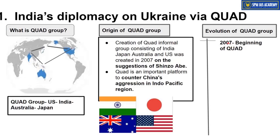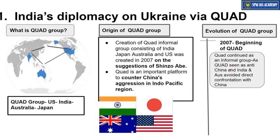In 2007, this idea was pitched, but Quad continued to be an informal group because India had some reservations. India had been trying to balance its ties with China given the huge economic integration — China is one of India's largest trading partners. Second, India shares a long boundary with China, and we do not want to provoke any border conflicts or stand-offs. This is why India had reservations regarding the formalization of Quad, and it remained an informal group with no proper structure, no secretariat, and no proper agenda.